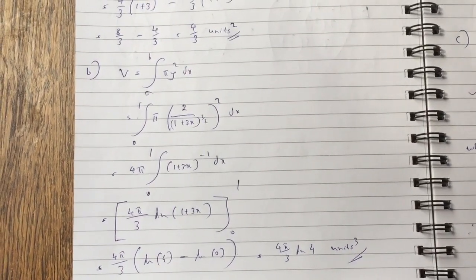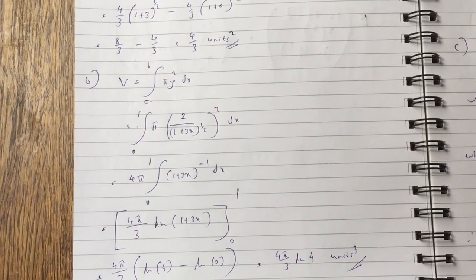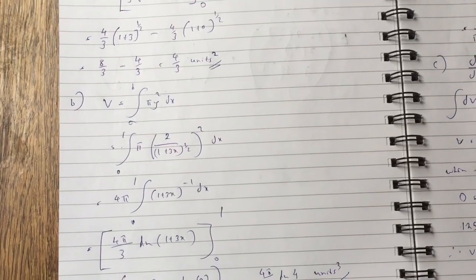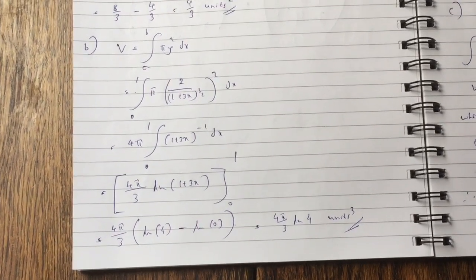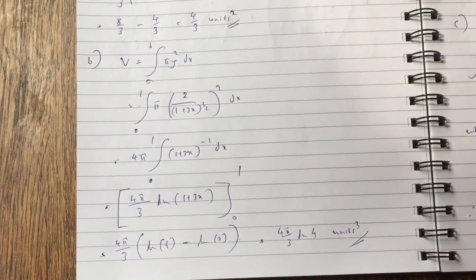1 plus 3x to the half squared is basically 1 plus 3x to the minus 1 when you bring it to the top and then you integrate it. You get 4 pi over 3 ln 4 unit cubes.